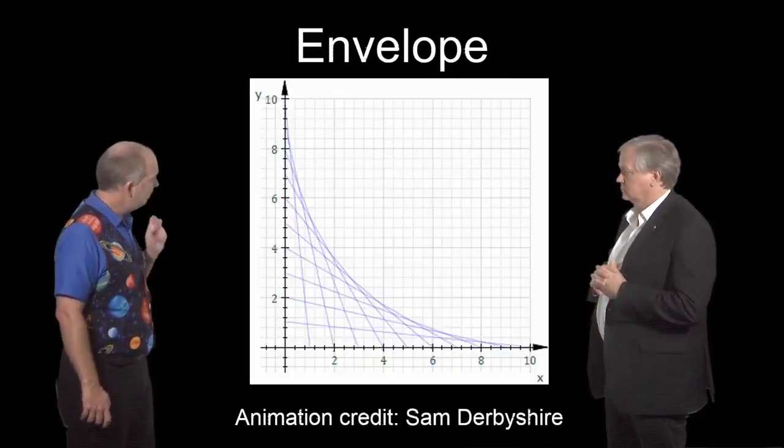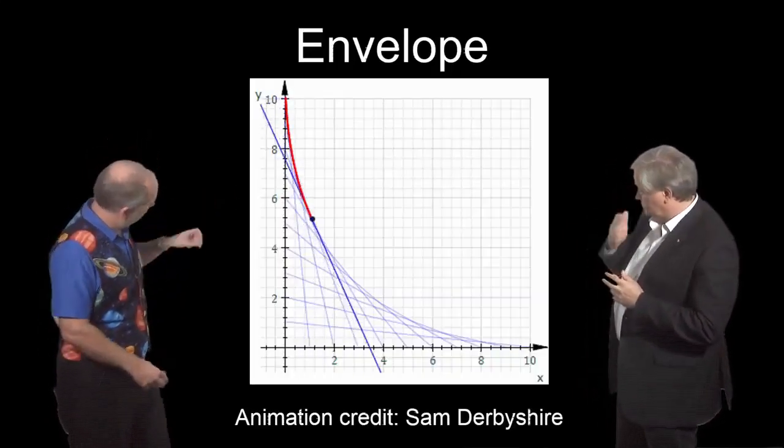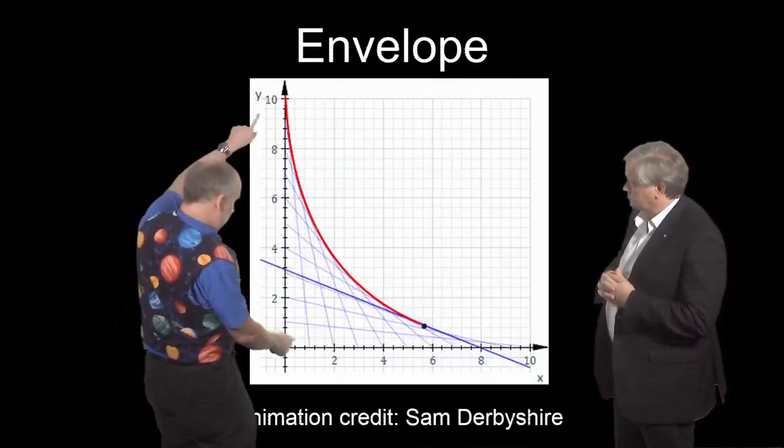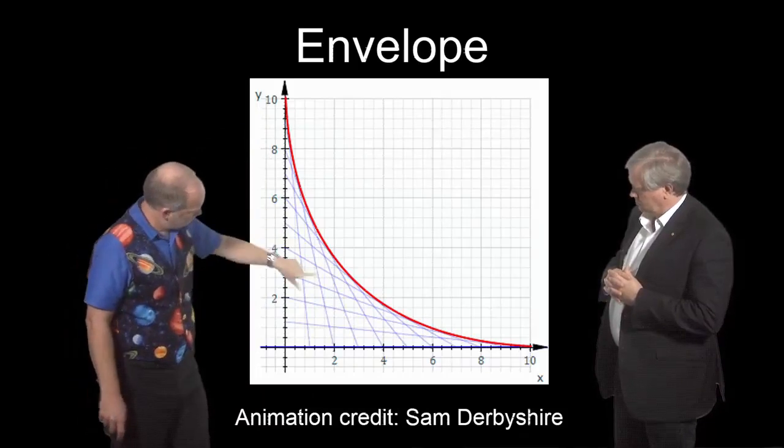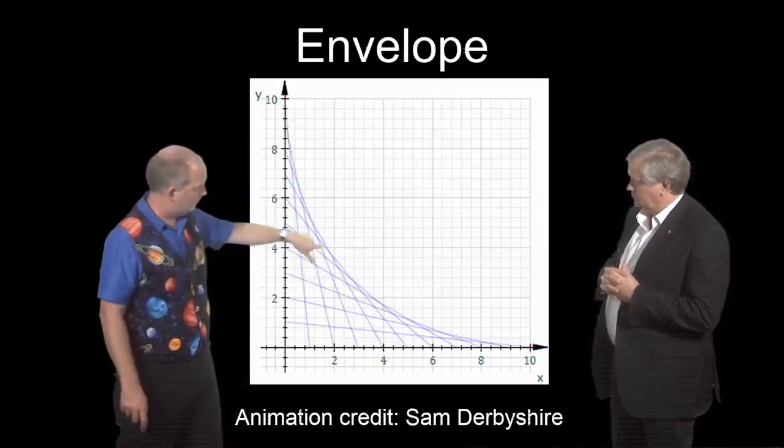Here's the example they gave on Wikipedia. So here's a family of curves so each curve starts here and you move down and around and when you do them all you get an envelope which is tangent to all of these things.